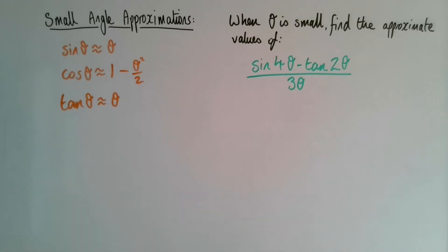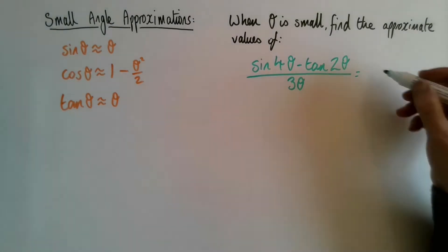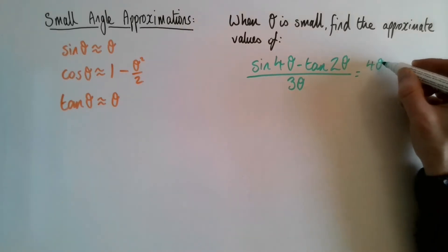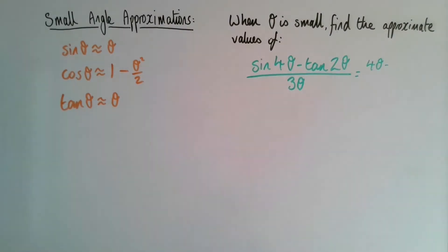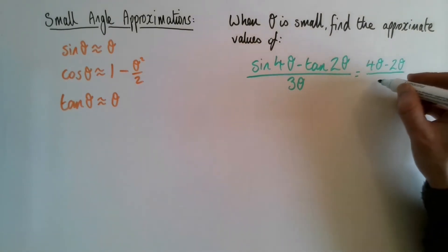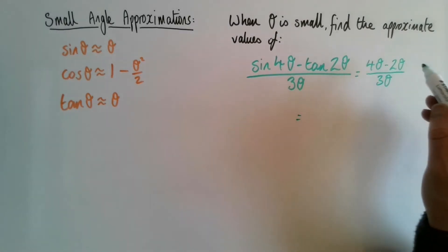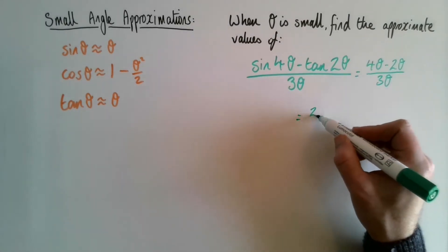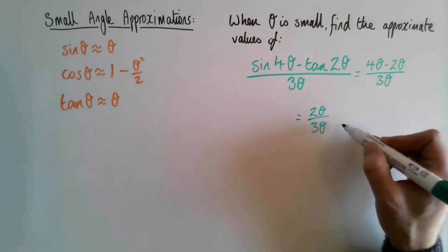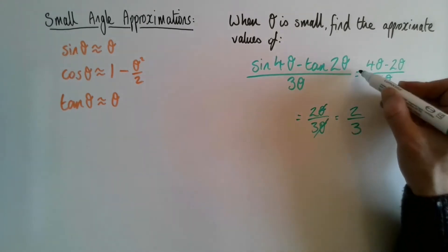Looking at this first example, all we need to do is say: sin 4θ, if θ is very small, is approximately 4θ. And tan 2θ, if θ is very small, is approximately 2θ. That is all being divided by 3θ. So simplify: 4θ plus 2θ is 6θ — wait, we just add them — divided by 3θ. Divide by θ top and bottom and we get two thirds.